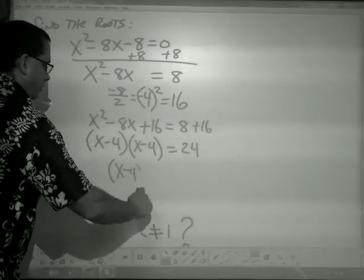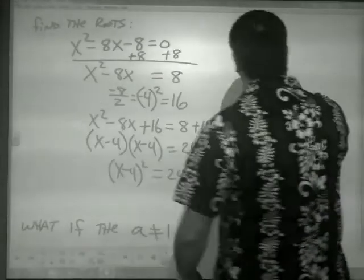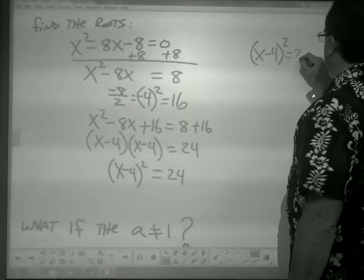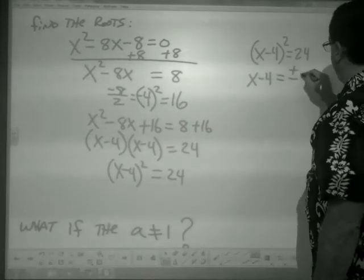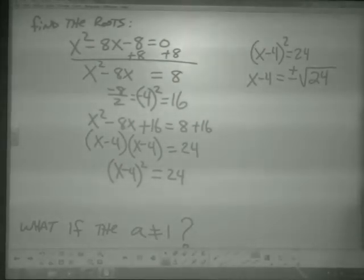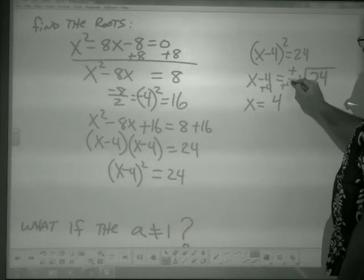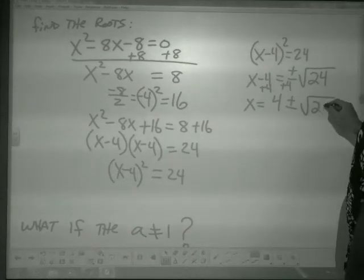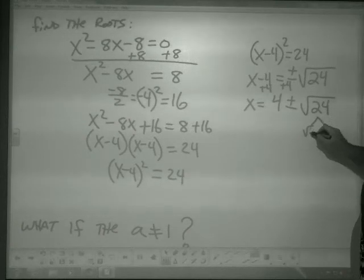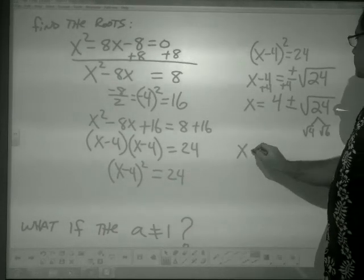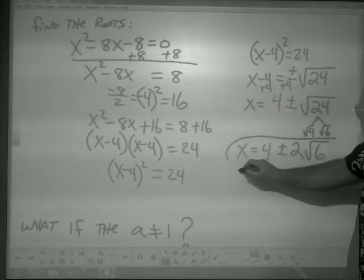Factor: (x - 4)(x - 4) — again, that negative 4 goes in both spots. Rewrite as (x - 4)² = 24. Take the square root: x - 4 = ±√24. Bring the 4 over: x = 4 ± √24. Now simplify √24: break it into √4 · √6 = 2√6. So x = 4 ± 2√6. Done.